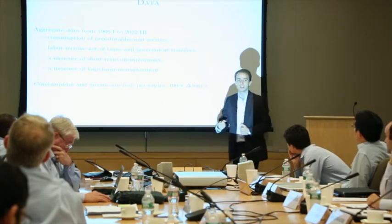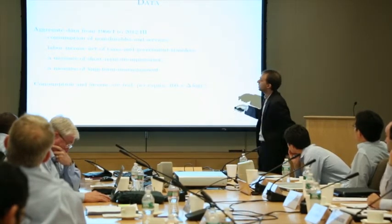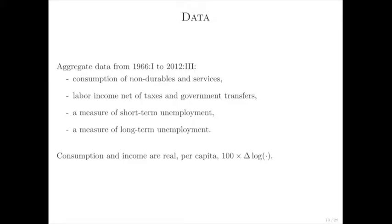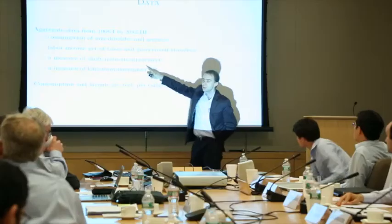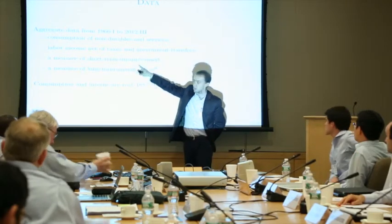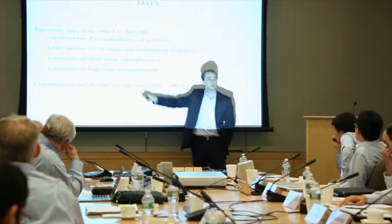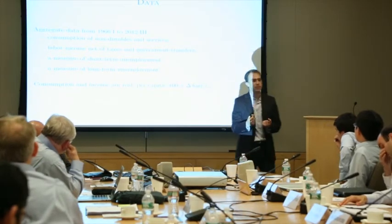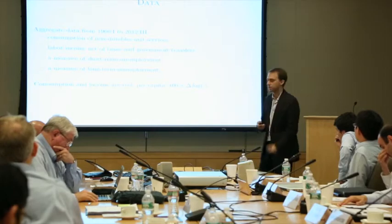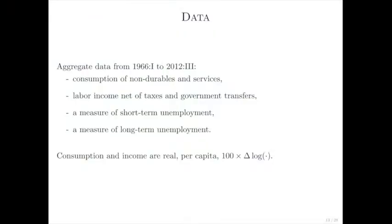The data I'm asking the model to explain span 1966 to 2012 and include consumption of non-durables and services, labor income net of taxes and transfers, a measure of short-term unemployment, and a measure of long-term unemployment. Separating short-term and long-term unemployment allows me to identify separately job-finding rates and job-separation rates. Consumption and income are real per capita and expressed in growth rates.